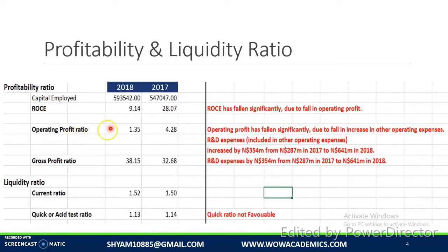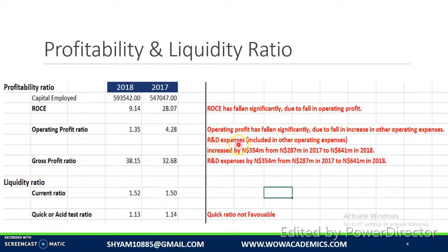The operating profit ratio is somewhere around 4.28% in 2017 and 1.35% in 2018. There has been a substantial reduction in operating profit and this reduction is due to the increase in other operating expenses — specifically R&D expenses which have been increased by 354 million N dollars. That is the actual cause for the reduction in operating profit.